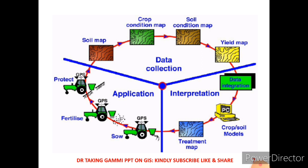In case of data collection, GIS helps in soil mapping, crop condition mapping, soil condition mapping, and yield mapping. In interpretation, GIS helps in data integration, soil or crop models, and treatment mapping. In case of application, GIS helps in how to conduct sowing, how much fertilizer to use and where to use it, and how to protect crops from pests and diseases.